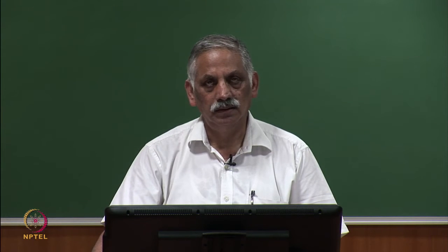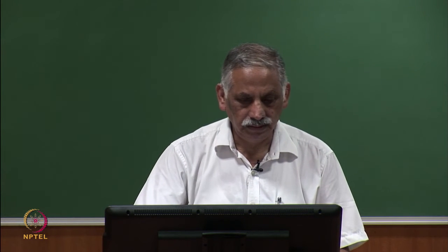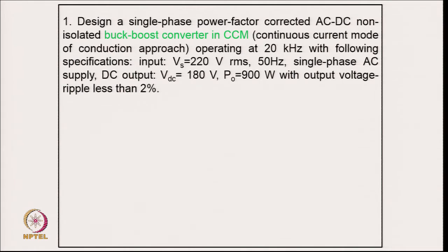Welcome to the course on power quality. Today we will be discussing numerical examples on power factor corrected buck-boost single phase converters. The first problem: design a single phase power factor corrected AC-DC non-isolated buck-boost converter in continuous conduction mode operating at 20 kilohertz with input voltage of 220 V RMS, 50 Hz single phase AC supply, DC output of 180 V, power output 900 W, and output voltage ripple less than 2 percent.